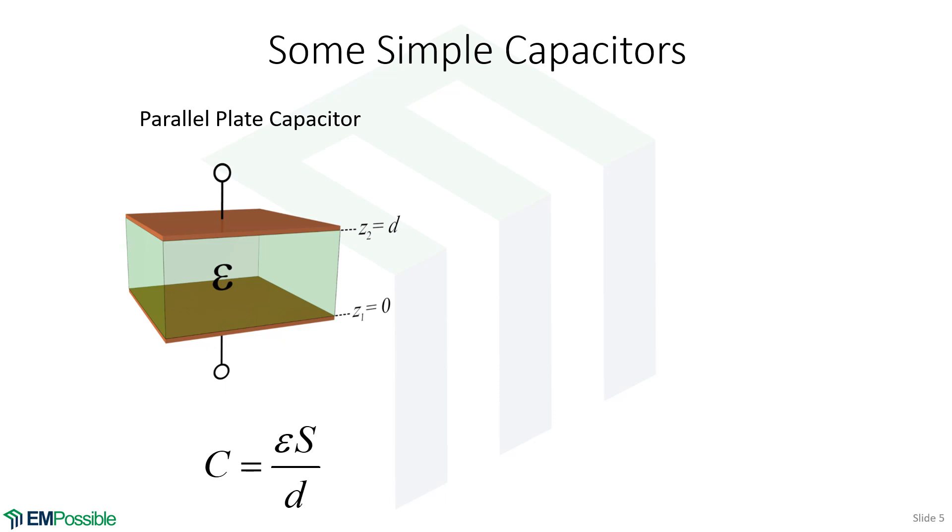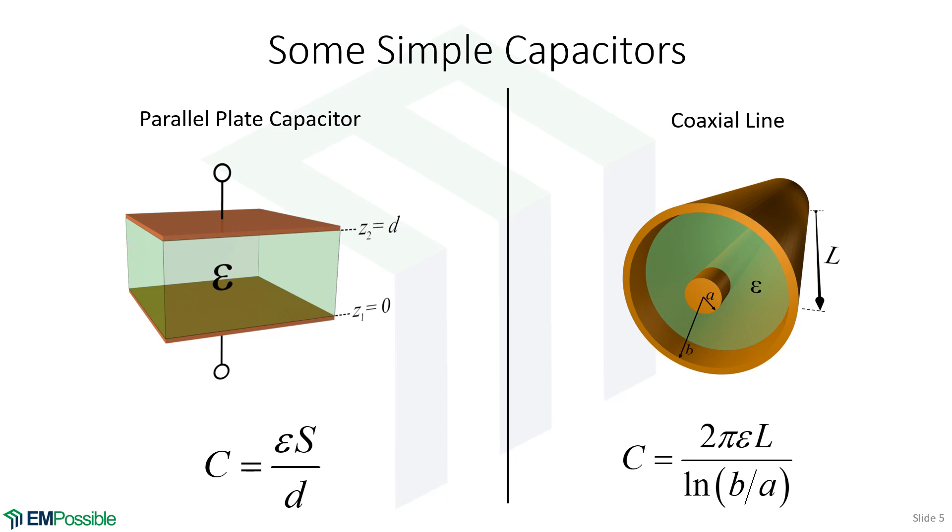We're not going to do the derivations here. That will be in following examples, but one thing we're going to do is derive the capacitance for a parallel plate capacitor, and we'll also derive the capacitance for a coaxial line.